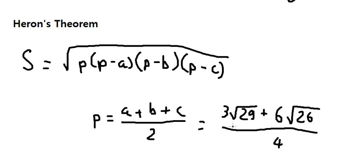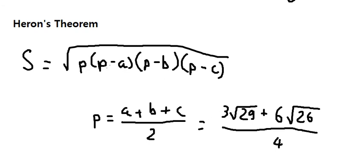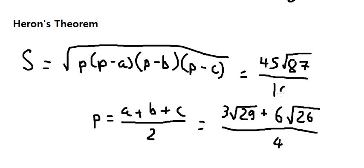Now we put this value in the formula. We can find the area, which equals forty-five times the square root of eighty-seven over sixteen square meters. This is the end — thank you for watching.